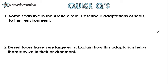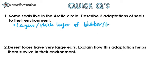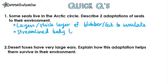It's time for some quick questions. Pause the video, try the questions, and then press play to go through the answers. Question one: some seals live in the Arctic Circle — describe two adaptations of seals to their environment. They have layers of blubber or fat to insulate their body from the cold. They also have streamlined bodies to swim quickly to catch fish.